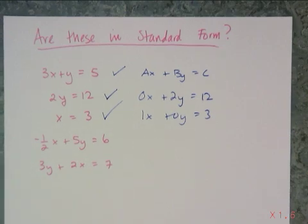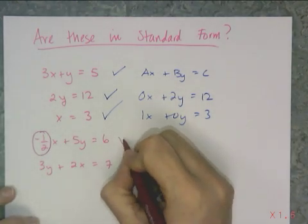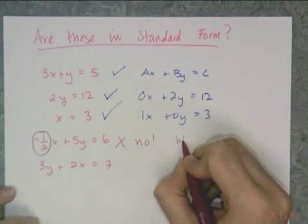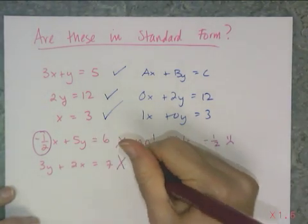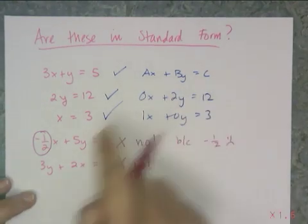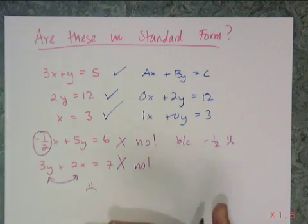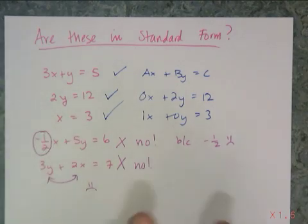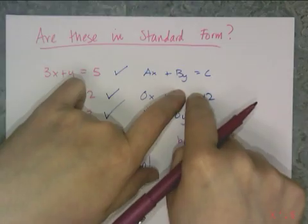Now these last two are not in standard form. The most missed thing with standard form is leaving fractions in there. In algebra 1, you can have no fractions in standard form, so an equation with a negative one-half coefficient is not standard form. Also, the order matters — it must be ax plus by equals c, so you can't have the y term before the x term; those have to swap. Standard form is very rigid. The placement of the variable makes a huge difference: x comes first, then y, no fractions allowed.